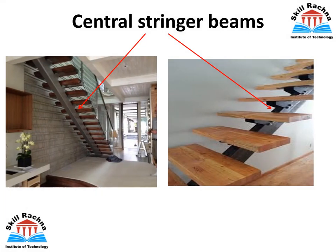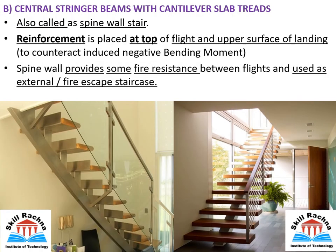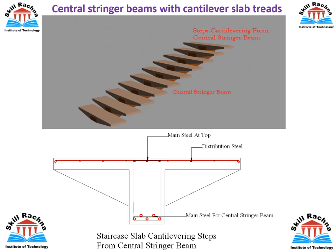The next type is the central stringer beam, also called a spine wall staircase. This is suited for cases where the client's budget is moderate. In this case, the reinforcement is at the top to counteract the negative bending moment, because it acts on a cantilever basis. Such a staircase system also provides fire resistance. The rebar is at the top, as clearly seen in the images, since it behaves like a cantilever beam.